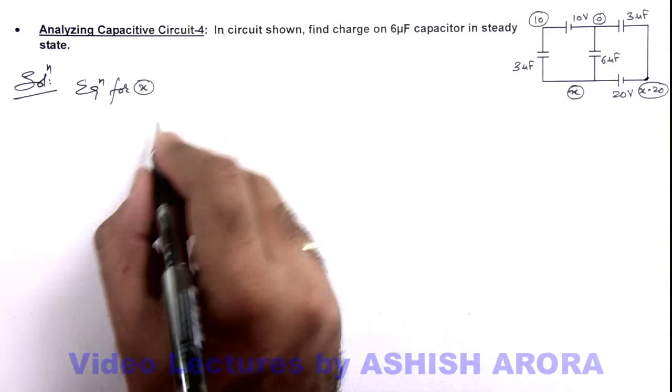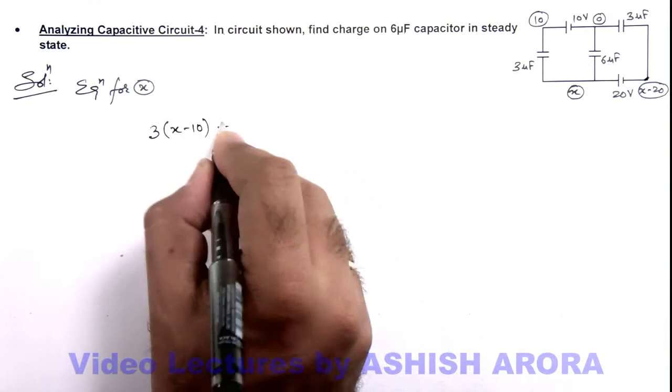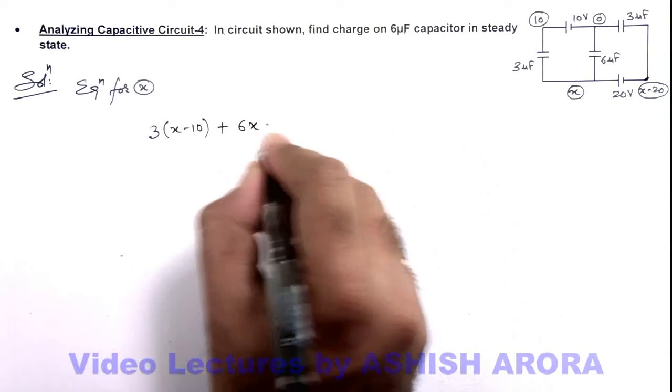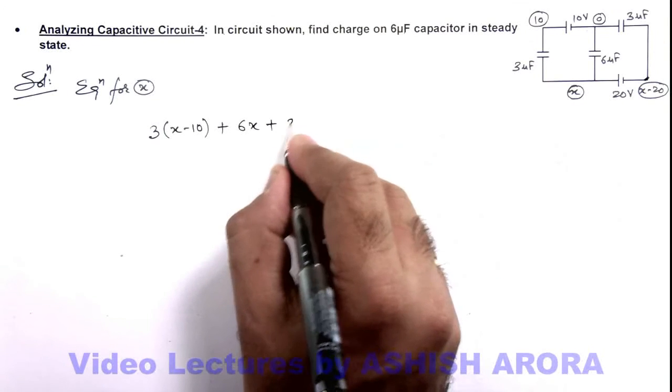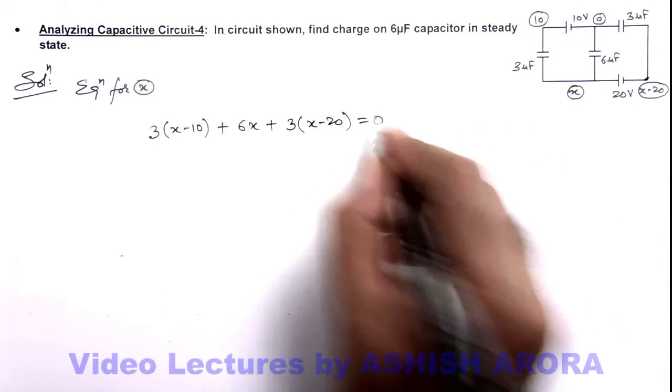So charge on this plate will be c v that is 3 multiplied by x minus 10, plus charge on 6 micro farad will be 6 x, plus charge on this 3 micro farad will be 3 multiplied by x minus 20, and this should be equal to zero.